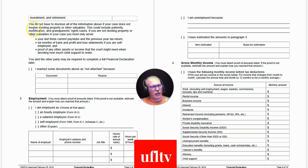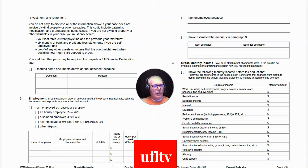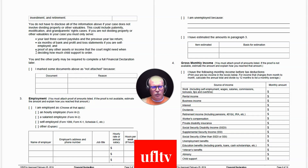You'll also notice on page 3 that you don't have to disclose all the information in the typical 14-page form in certain instances — specifically if your case does not involve dividing property or other valuables, bullet points show you what to do instead. But that's an exceptional situation. We're going to treat this as the typical divorce situation, which is what most people will deal with. The next paragraph covers information about employment.